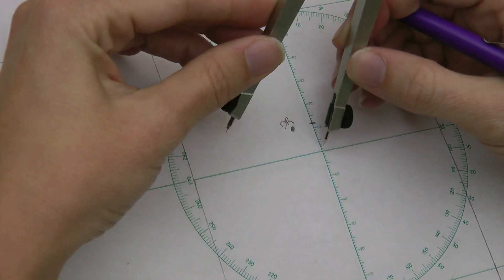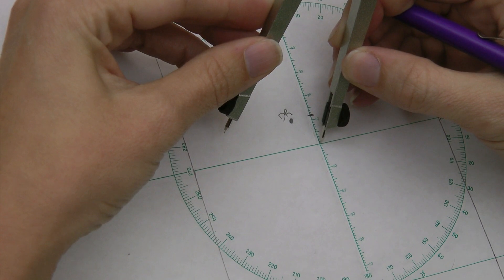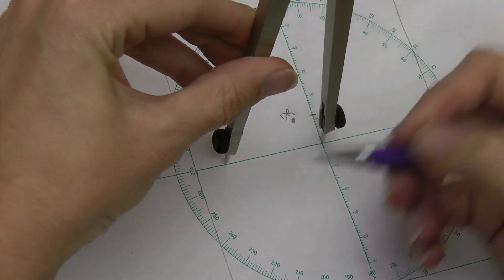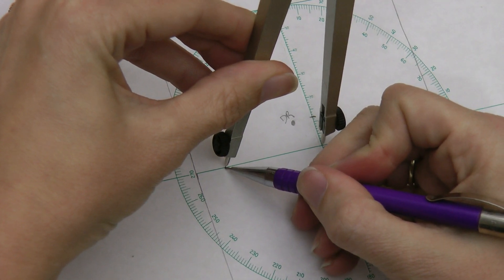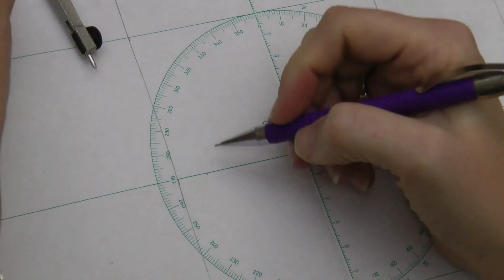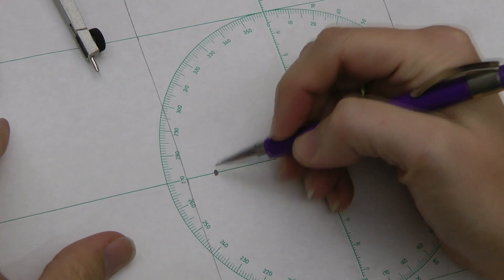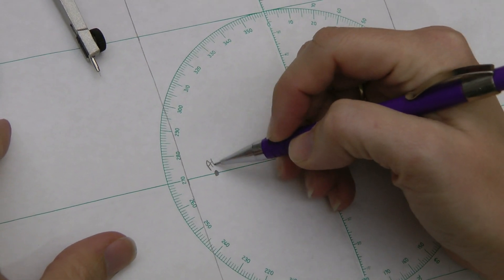Let's say we have an assumed latitude of 30 degrees north, an assumed longitude of 60 degrees west and 46.5 arcminutes. Using the same methods that we used for dead reckoning, we measure out and mark our assumed position on the chart, labeling it AP for assumed position.